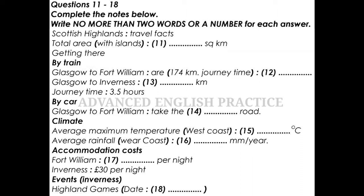Getting there is easy. From Glasgow, a good starting point is Fort William on the west coast, with regular bus and rail services linking the two. I'd recommend the train, which takes four hours to get there. Alternatively, you can take the Highland line, which takes the more easterly route up to Inverness, taking around three and a half hours to cover the 280 kilometres.